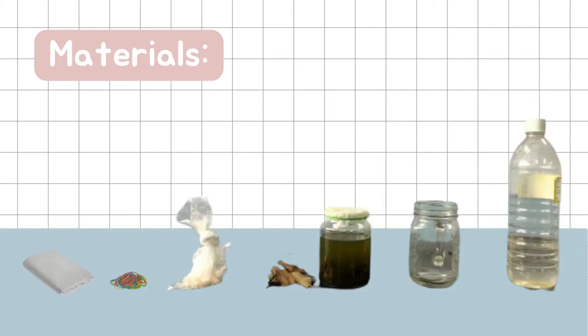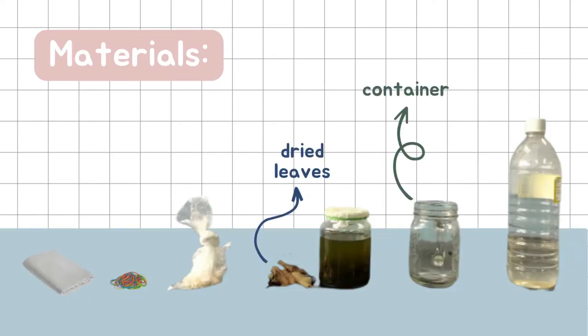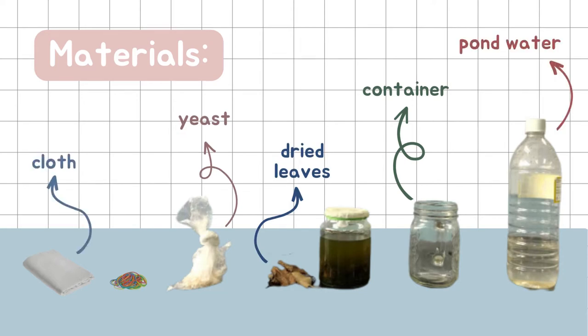You will need a container, dried leaves, and yeast as food, pond water that contains the microbes, cloth, and rubber bands to seal the culture.